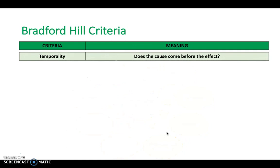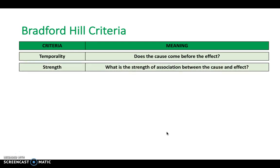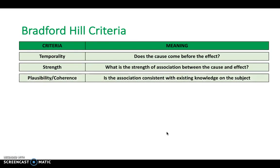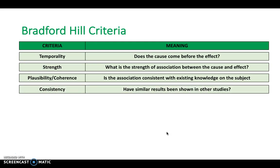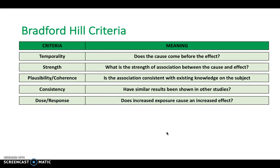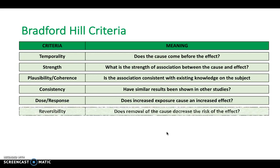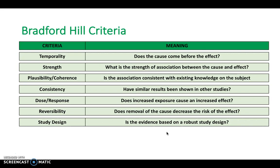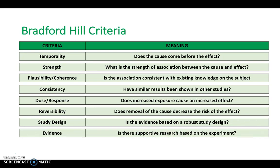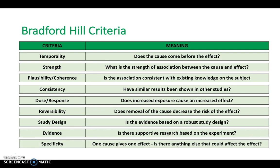First, you've got temporality — does the cause come before the event? If the cause is coming after the event, it's not really causing it. With strength, what's the strength of association? This goes back to the association graphs and correlation coefficients. Is it plausible and is it coherent — consistent with existing knowledge? Is it consistent — have similar results been shown by other studies? Is it dose-response correct — if we increase the exposure or risk, does that increase the effect that follows? Is it reversible — if we remove the cause, does the effect go away? Is the study design robust? Is there supportive research based on experiment? And specificity — one cause gives one effect. Is there anything else that could cause the effect, or is it just that one cause?